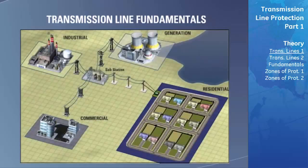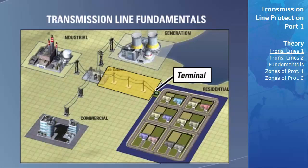In a power system, the area that constitutes a transmission line is defined by well-defined boundaries. This physical location of a line boundary is often called a terminal. The terminal can be a switch, a breaker, a bus, or a transformer.